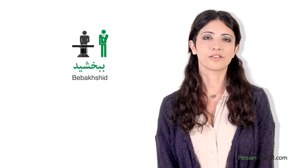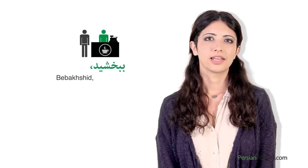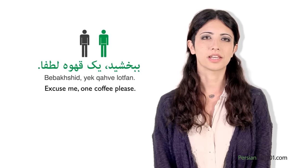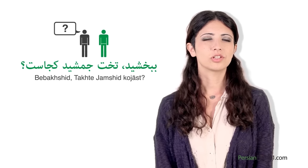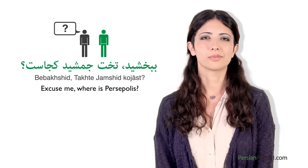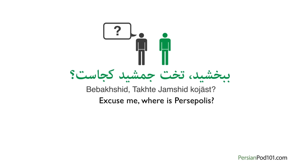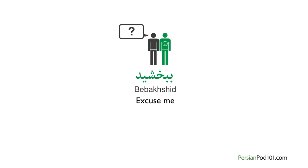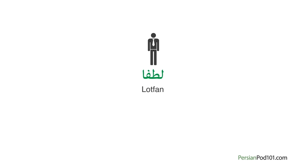'Bebekhshid' is used in situations like when we are ordering something in a restaurant or asking for something in a store. For example: 'Bebekhshid, yek qahve lotfan?' — Excuse me, one coffee please. We can also use it when asking a question: 'Bebekhshid, takht-e Jamshid koja-st?' — Excuse me, where is Persepolis? Similar to English, there is no informal way to say excuse me in Persian — the meaning is already polite. Persian people just ask questions more directly when speaking to a friend. But to make it polite, you can add 'lotfan,' meaning please, to the start or end of a phrase when asking for something. 'Lotfan yek qahve midi?' — Can you give me a coffee please?